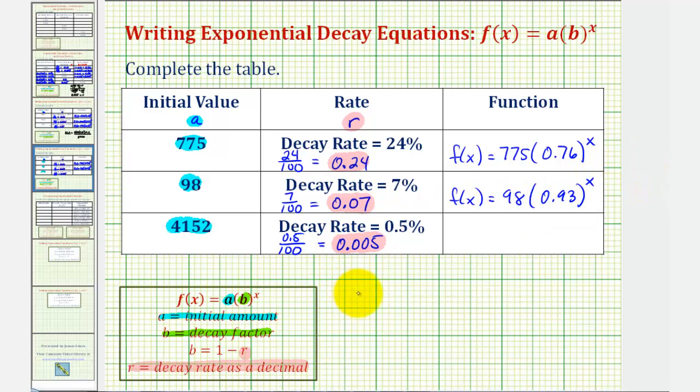And now, for the last function, we'd have f(x) equals 4,152 times one minus 0.005 raised to the power of x. So we'd have f(x) equals the initial value of 4,152 times the base, or the decay factor, of 0.995 raised to the power of x. I hope you found this helpful.